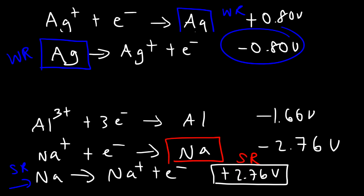In summary: metals and negatively charged ions tend to be reducing agents; nonmetals and positively charged ions tend to be oxidizing agents. You can also have a positively charged metal ion behave as an oxidizing agent. The more positive the cell potential, the more spontaneous the reaction and the greater the driving force for that process to occur.